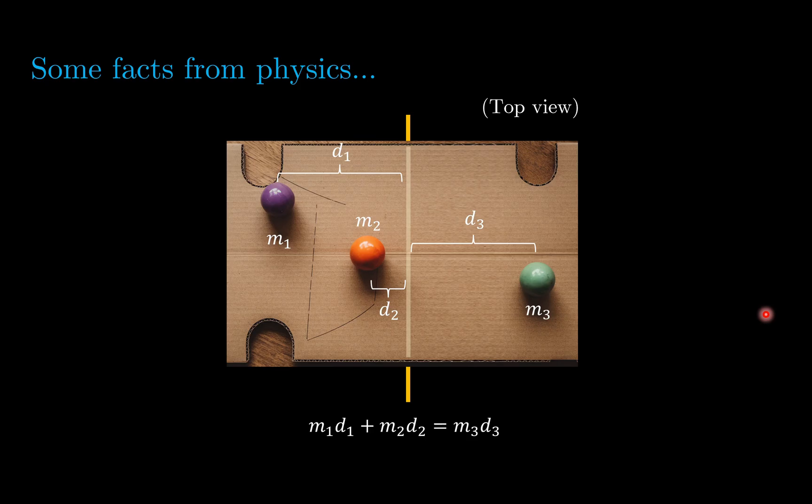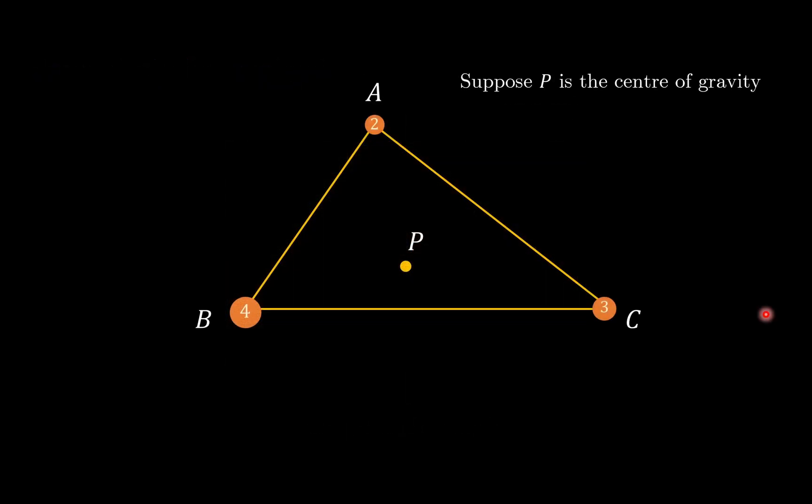Even if you are not very familiar with the physics, hopefully this makes intuitive sense to you. We are going to apply these concepts to solve geometry problems. Suppose you have a triangle ABC, and pretend that this is a triangular plane. This is a top view again. At the vertices, you are hanging weights: weight 2, weight 3, and weight 4. Suppose that after putting the weights at these locations, P is the center of gravity.